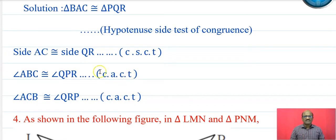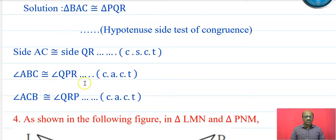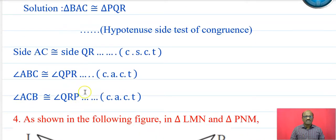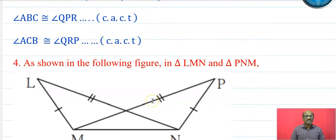The corresponding remaining parts are: side AC is congruent to side QR, angle ABC is congruent to angle QPR, and angle ACB is congruent to angle QRP.